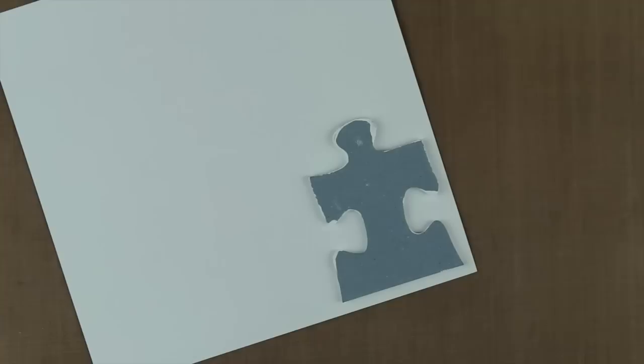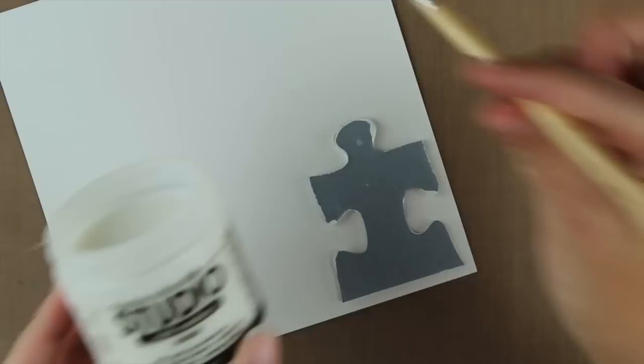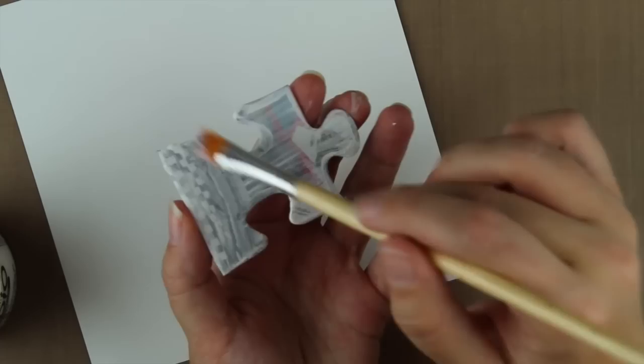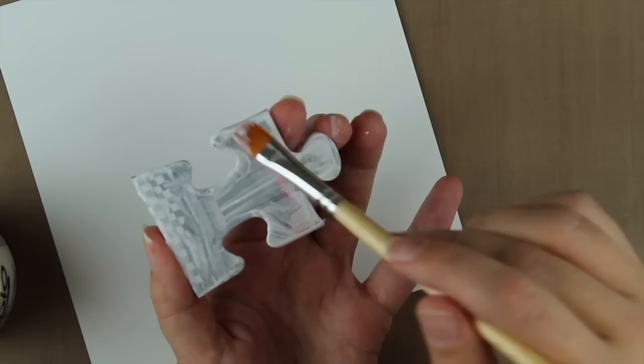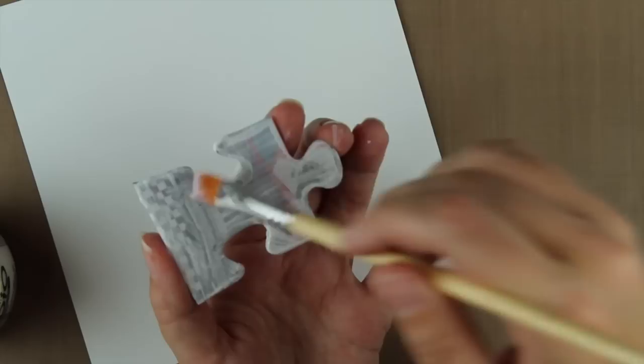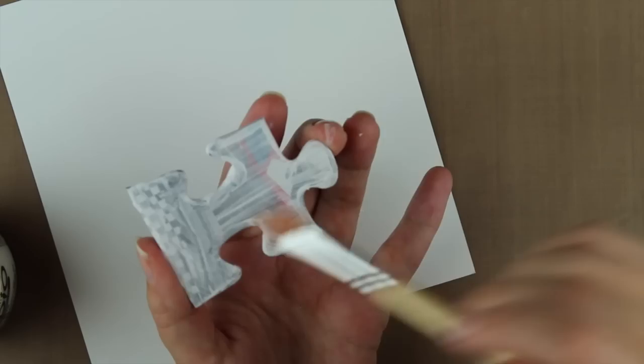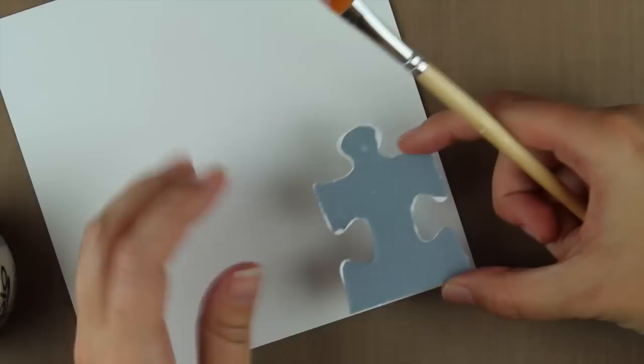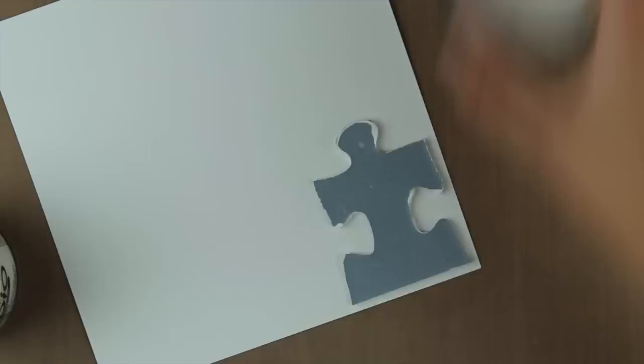Then I use my multi-medium. I use the same as gesso. So it's the Claudine Helmut multi-medium. Then I just cover my puzzle piece with the multi-medium. Adding a lot of multi-medium so you have a firm stick. And then I just put my puzzle piece on the paper like this and let it dry.